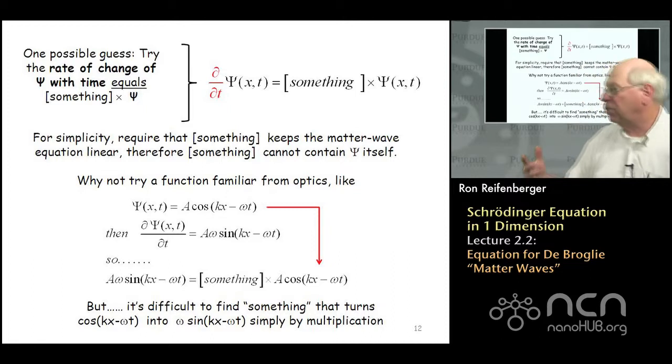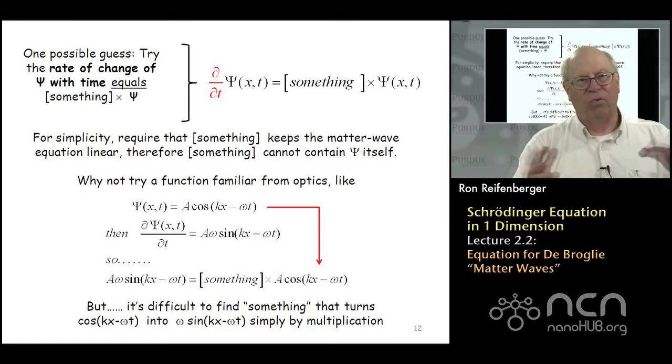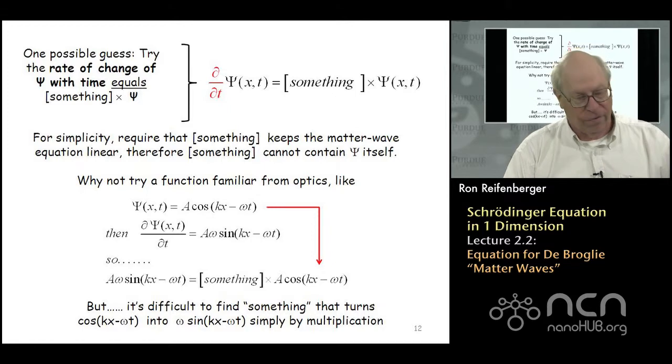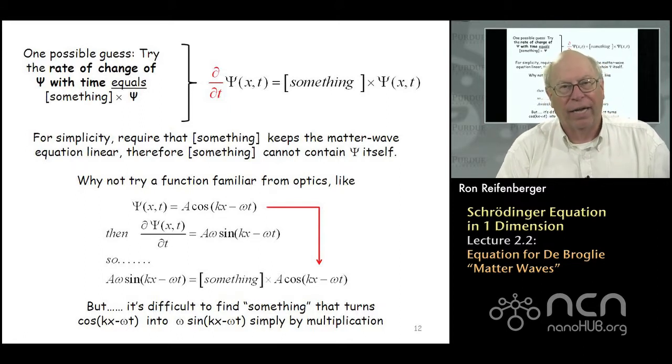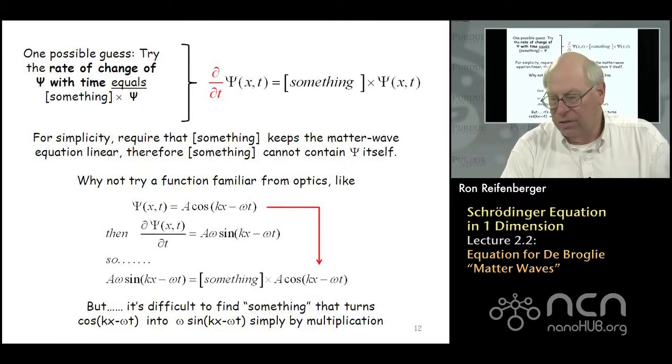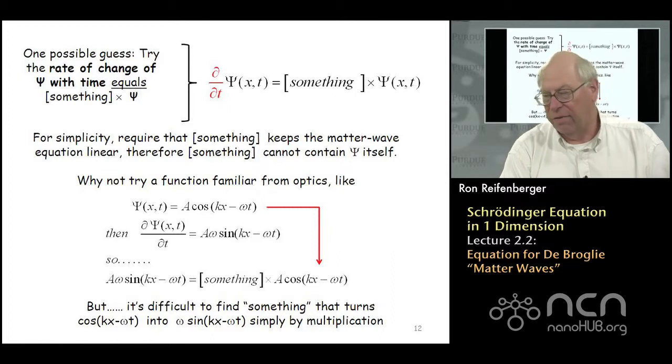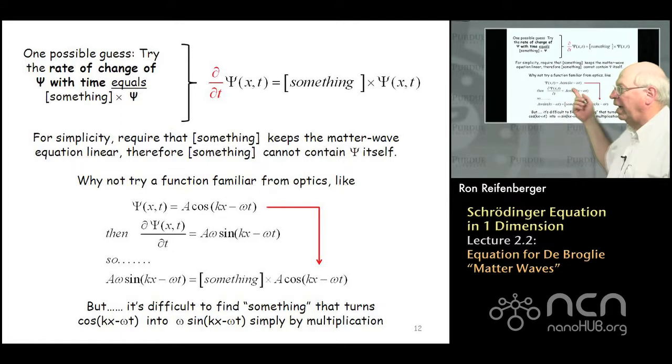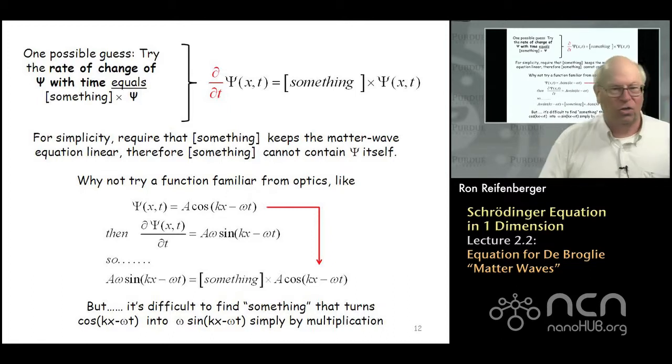So what type of function ψ obeys this type of an equation? Well, one thing you might think of is, well, try a sine or a cosine because those are very familiar functions from optics and from our study of electromagnetic waves. So I just work through the case. I do the algebra here for the case that the wave function ψ is equal to A times the cosine of kx - ωt. So the argument of the cosine is familiar to you as a traveling wave. A is the amplitude of that wave.